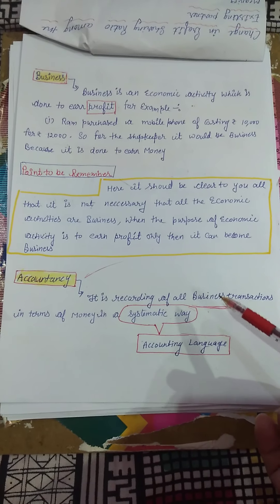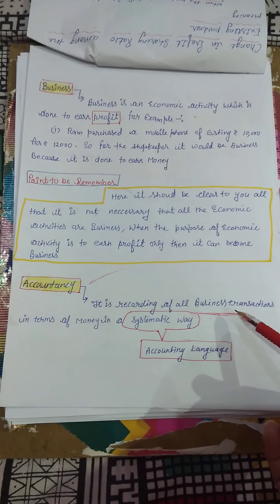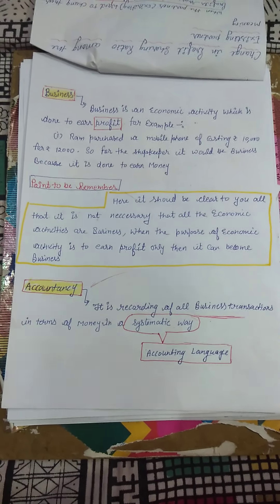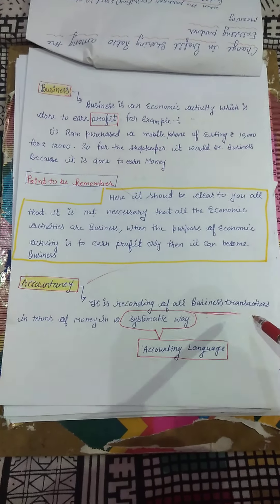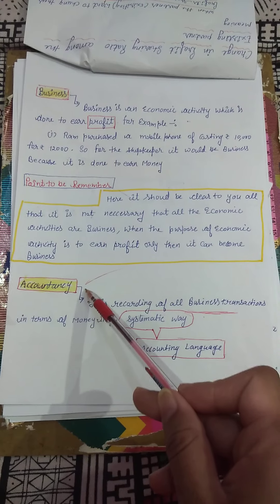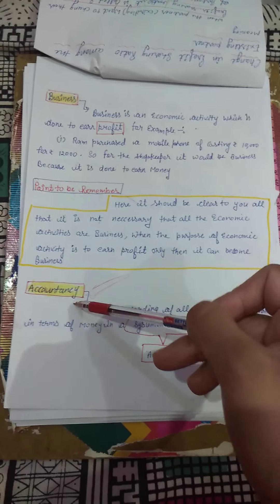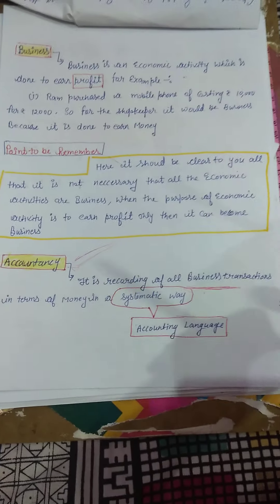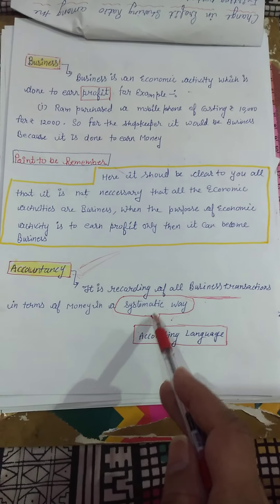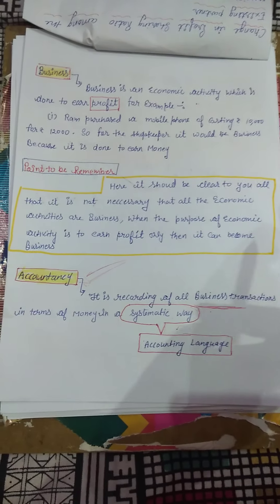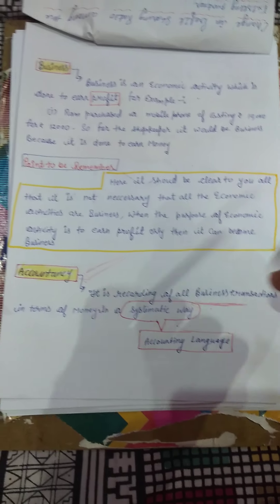Now I am explaining how business and accountancy are related to each other. Accountancy is the recording of all business transactions in terms of money. In business, every day a lot of transactions take place — we sell goods, we purchase goods, we return goods, customers return goods to us. It would be very difficult for a businessman to remember all these things, so he needs to write them down. The branch where we record all these business transactions — purchases and sales — is called accountancy.